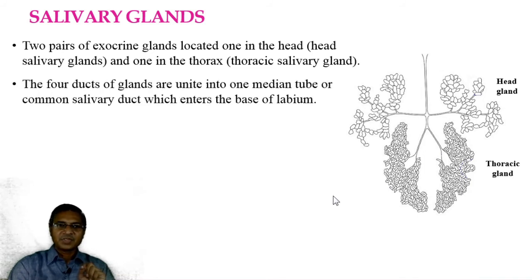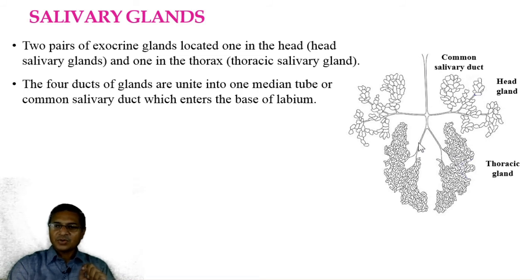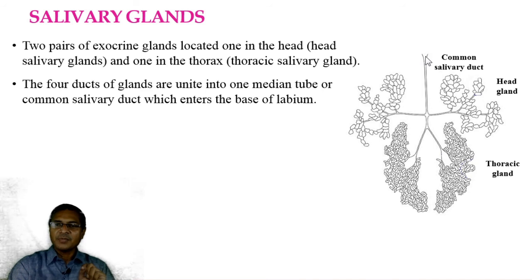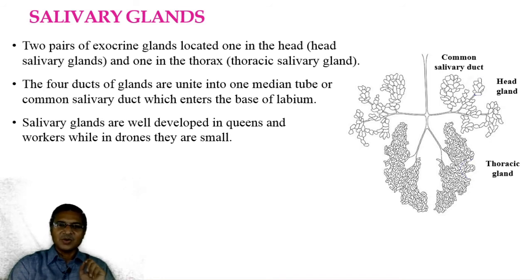The four ducts of the glands unite into one median tube or common salivary duct, which enters the base of the labium. The thoracic glands always remain paired; these are the ducts of the thoracic glands which unite one to another. The head salivary glands' ducts also unite here, and all the ducts unite to form the common or median salivary duct, which further opens at the base of the labium. Salivary glands are well developed in the queens as well as the worker bees, while in drones there is no necessity — they are very small and functionless.